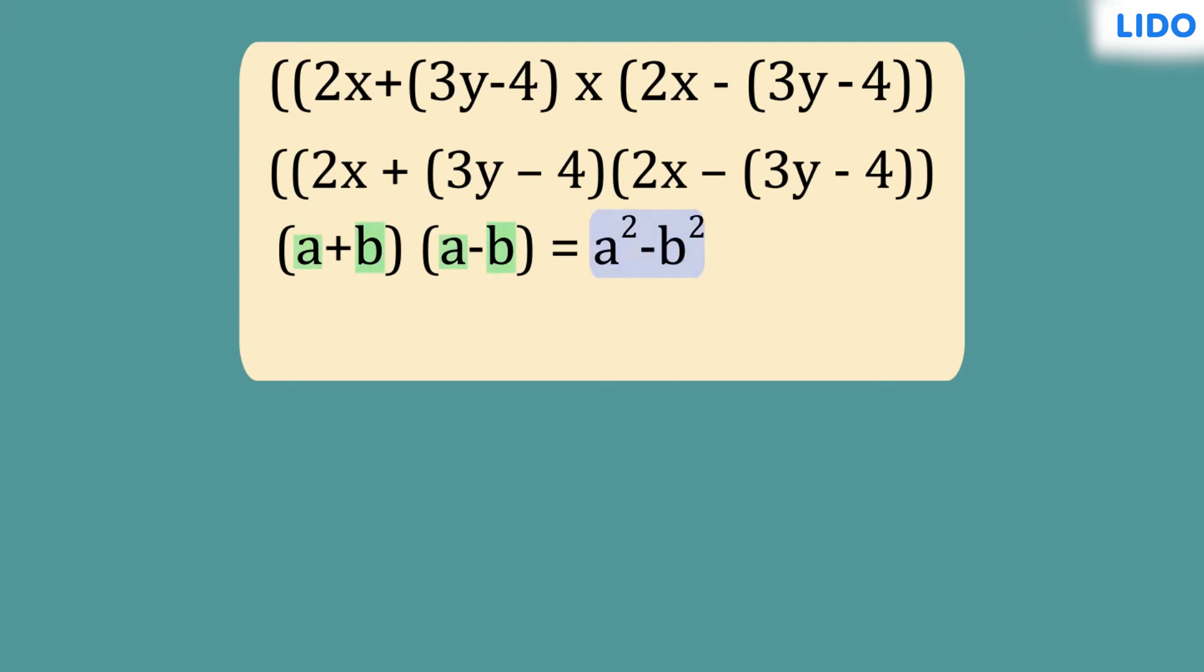On substituting the values of a and b in the identity, the given expression simplifies to 4x square minus 3y minus 4 the whole square.